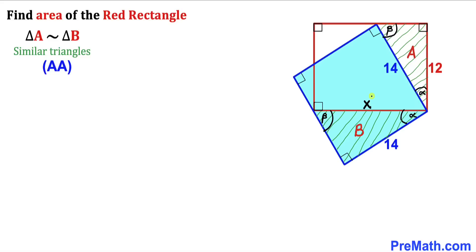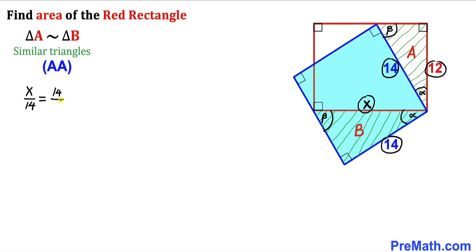From the similar triangles, we can write the proportion: x divided by 14 equals 14 divided by 12.